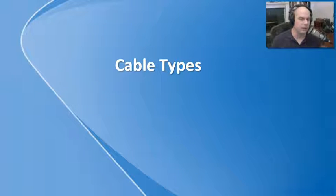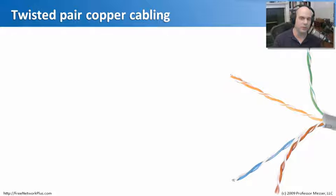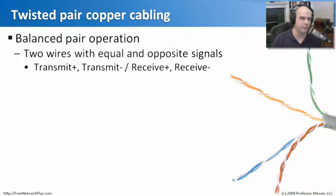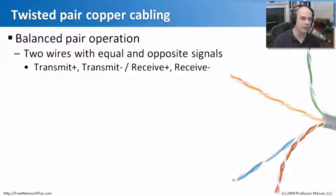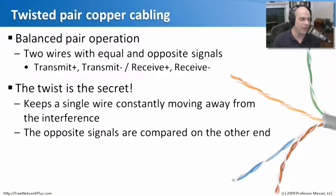Now that we know where the standards come from, let's talk about the different cable types. A very common cable is twisted pair copper cabling — probably the piece you'll see most often in almost every organization. It uses something called a balanced pair operation: one wire carries a positive signal and the other carries a negative signal. They're opposite signals of equal strength. This is very useful because the other end can compare those two signals and determine exactly what signal was really supposed to come through, even if there was interference on one side.